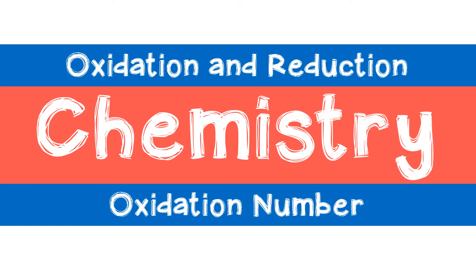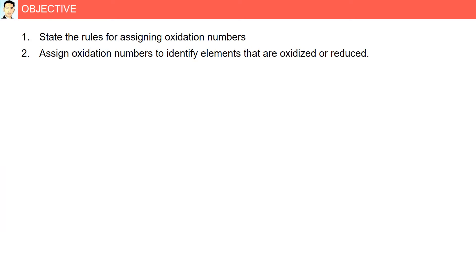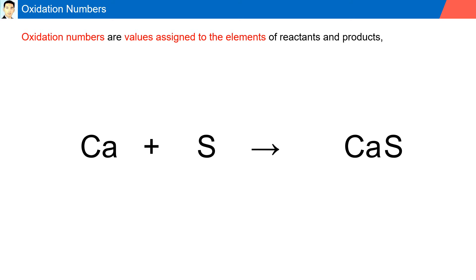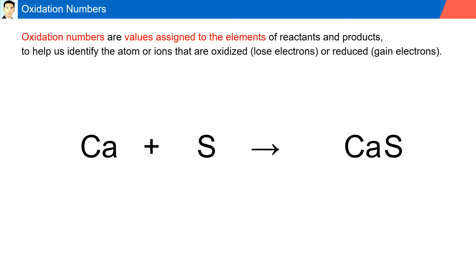Oxidation number objective: state the rules for assigning oxidation numbers, assign oxidation numbers, and identify elements that are oxidized or reduced. Oxidation numbers are values assigned to elements of reactants and products to help us identify the atom or ions that are oxidized — losing electrons — or reduced — gaining electrons.